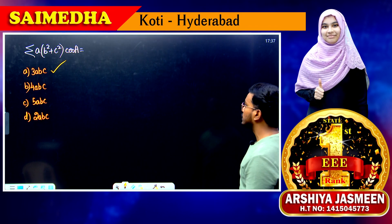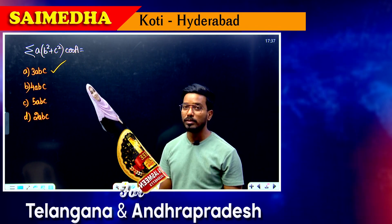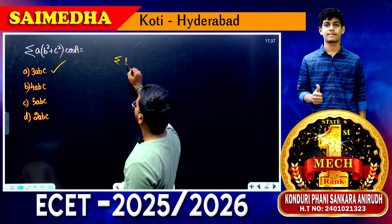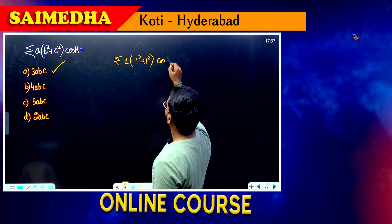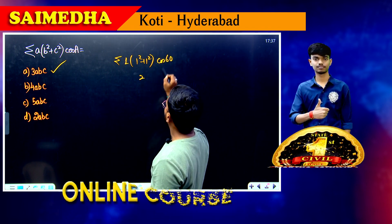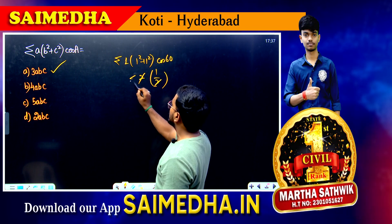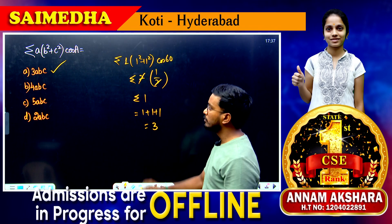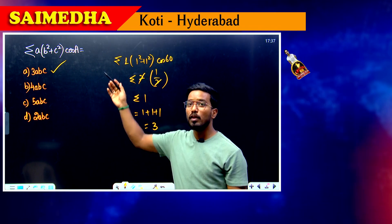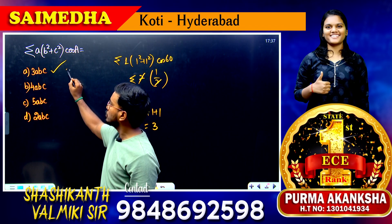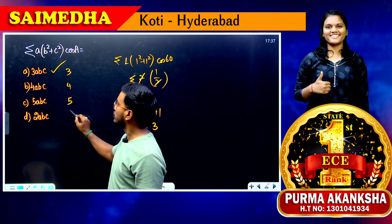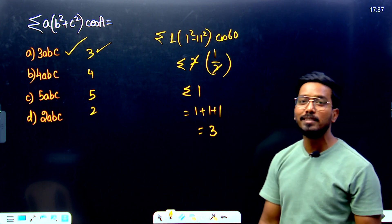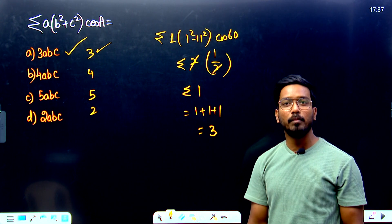For question two using the equilateral triangle method: sigma means write three times. a into (b² + c²) cos A = 1 × (1+1) × cos 60° = 2 × 1/2 = 1. So sigma 1 means 1+1+1 = 3. Checking the options: 3 corresponds to option A. That is how easily, if you know the equilateral triangle method, you can solve this within no time.